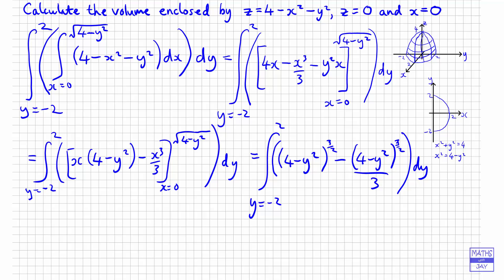And then we're integrating that with respect to y. So we've got 4 minus y squared to the 3 over 2 multiplied by 1 minus a third. So in other words, we've got 2 thirds of that. So that's equal to 2 thirds of the integral from minus 2 to 2 of 4 minus y squared to the 3 over 2 dy.